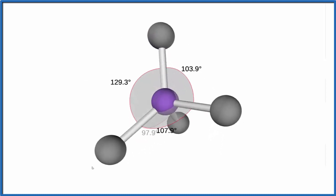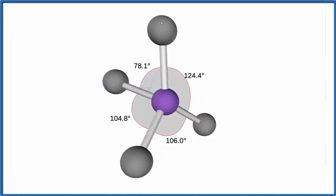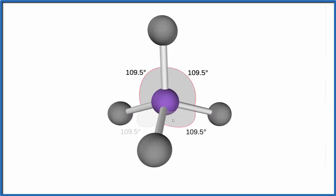If we wanted to look at the electron geometry, that would also be tetrahedral because we don't have any lone pairs on the central carbon atom. So our molecular geometry and electron geometry for CH2F2 is tetrahedral.